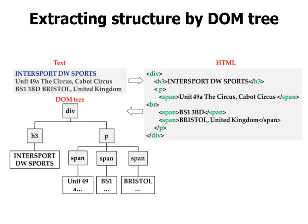Without going into the details of the DOM tree analysis, the basic idea is that if a given word appears in different text nodes in the DOM tree, then it is more important than if all its occurrences are in just one part.